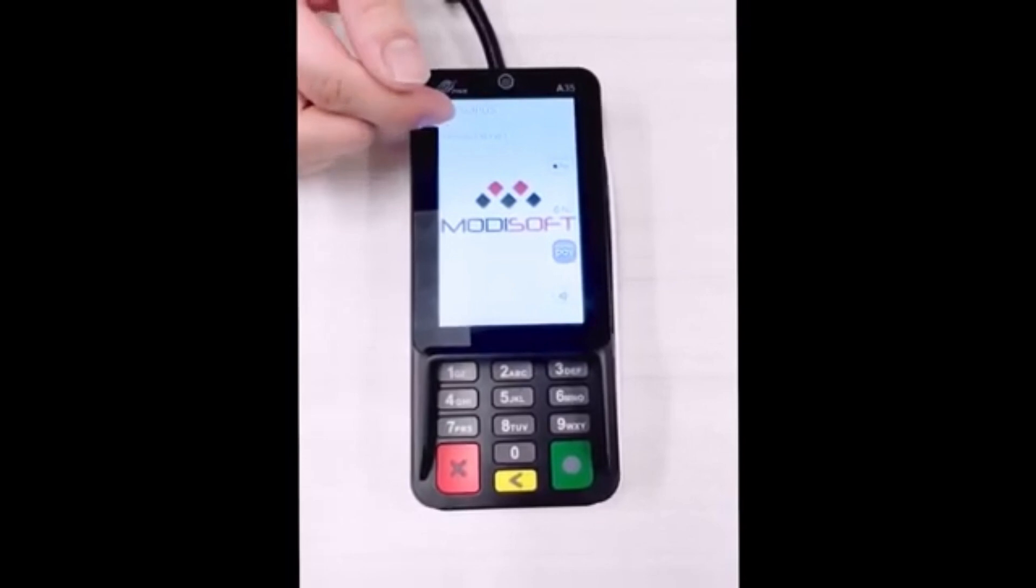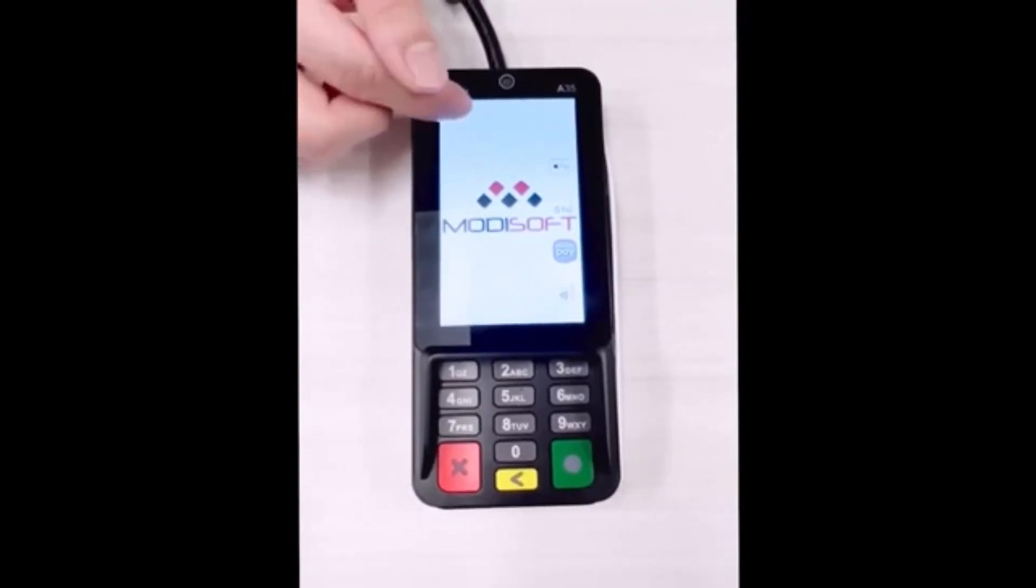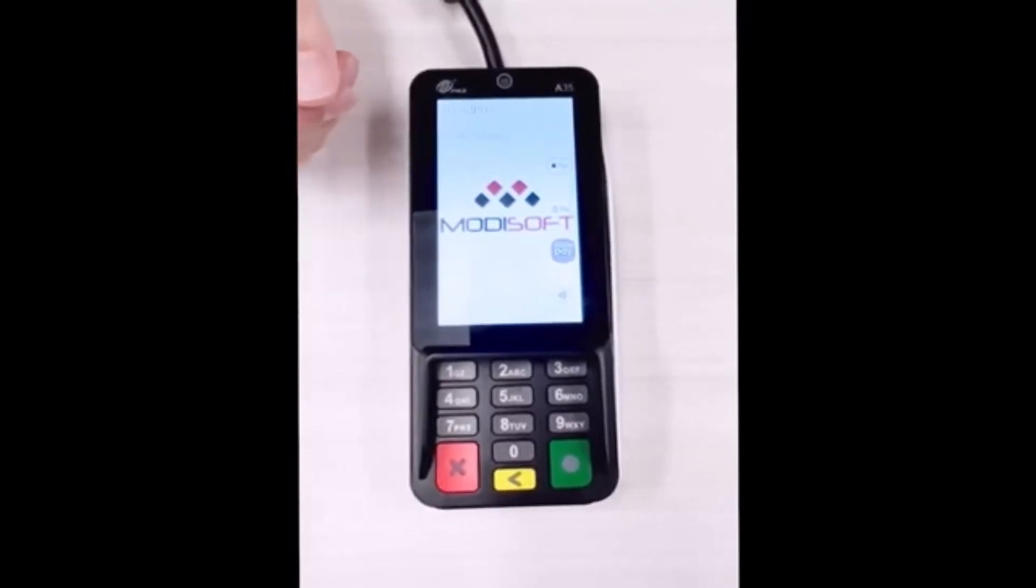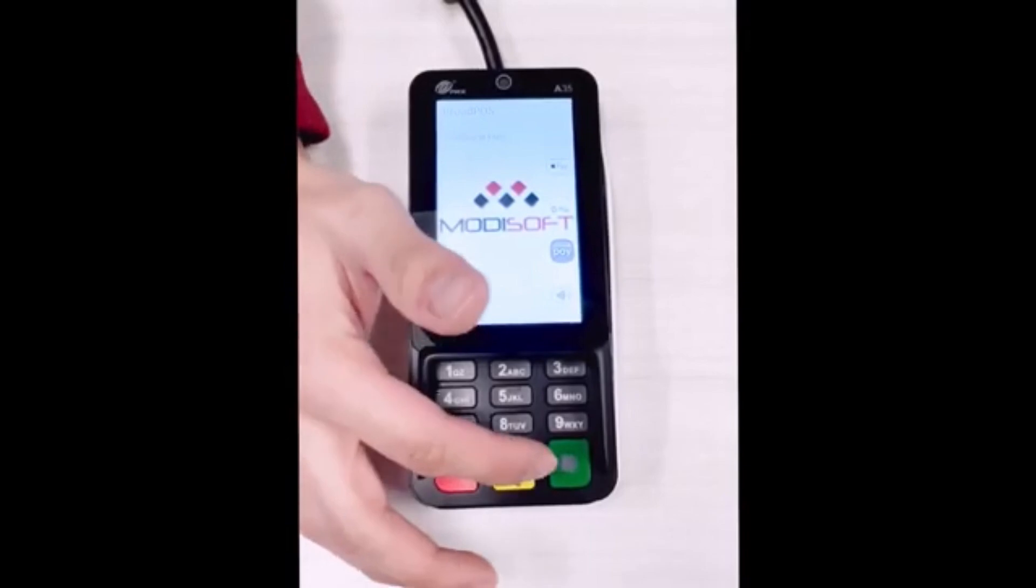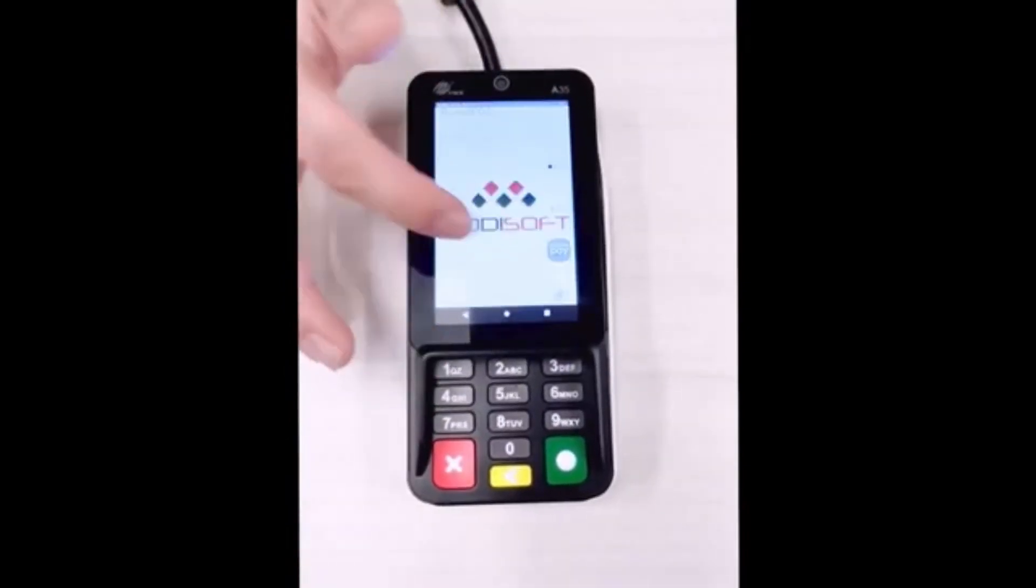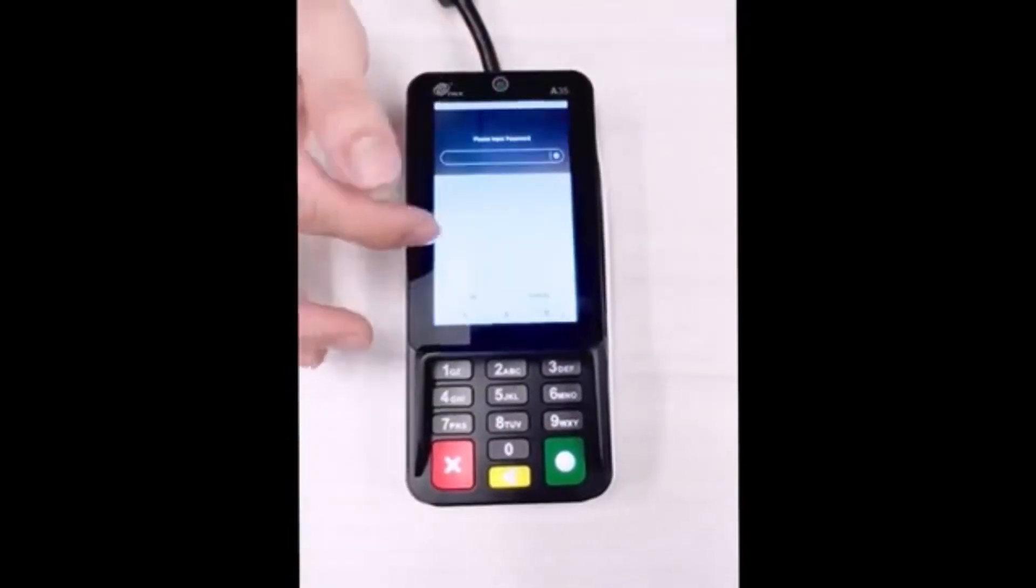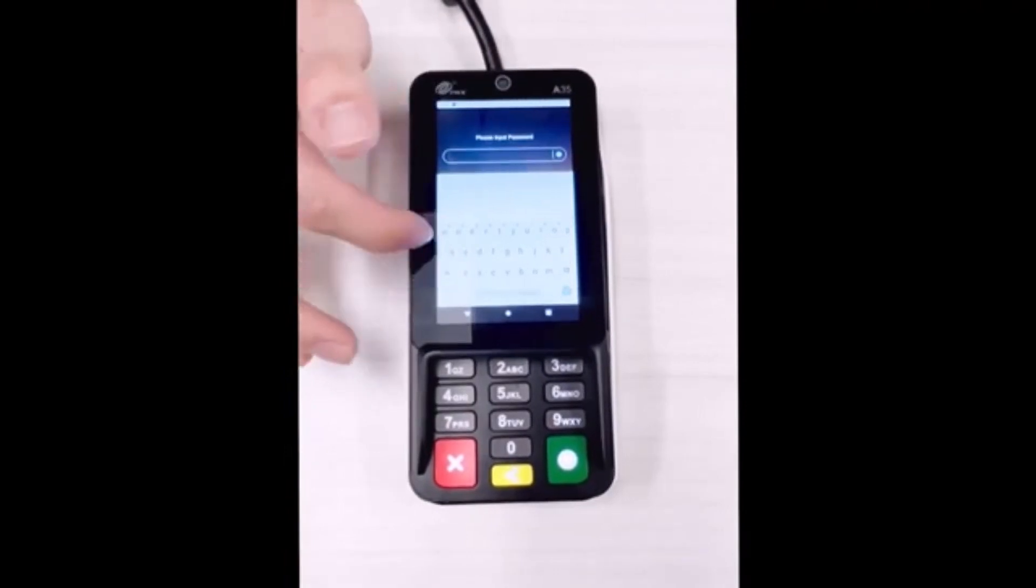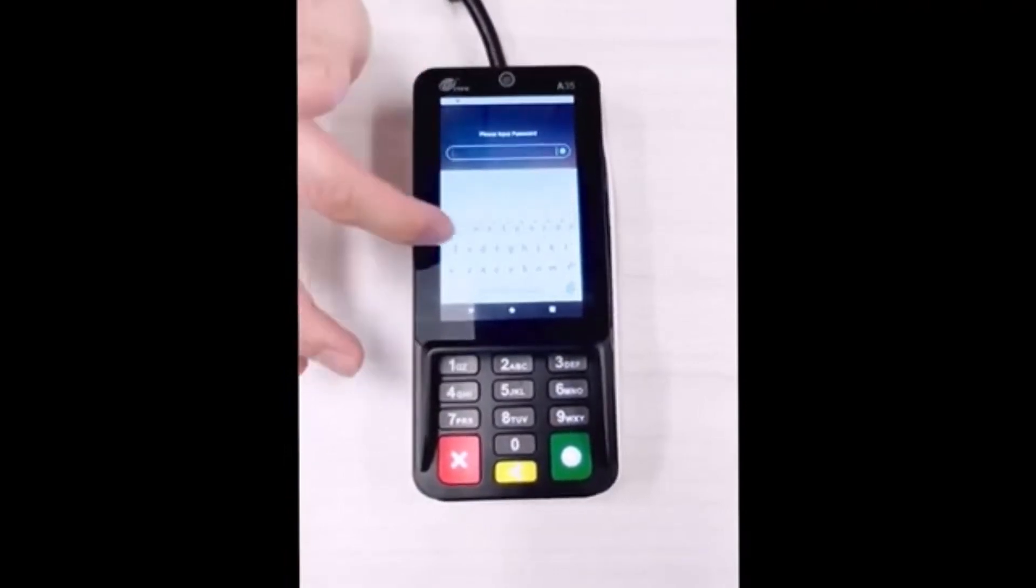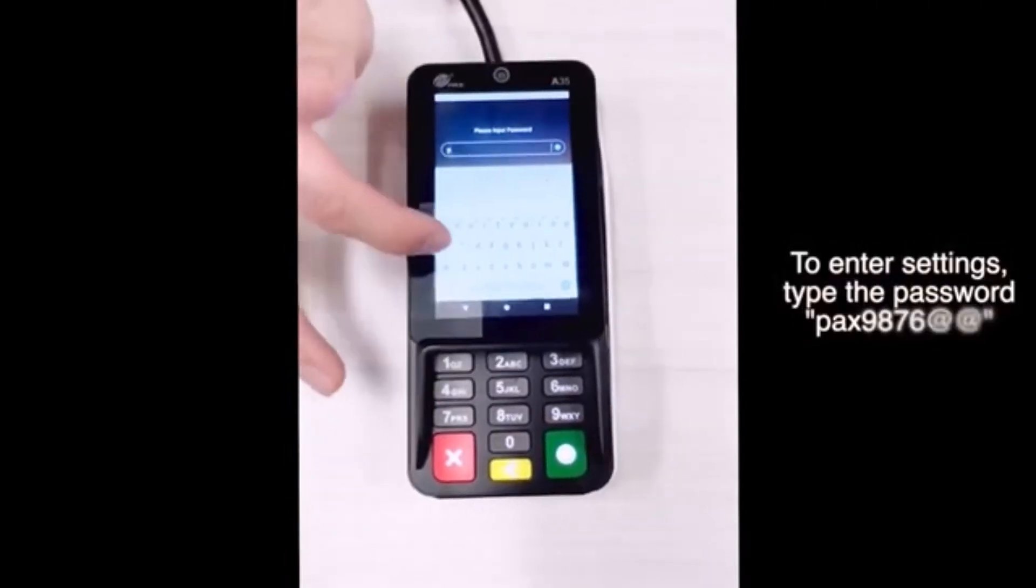If the IP is reading as 0.0.0, then you'll want to go ahead and go to the settings on the actual credit card terminal itself. And you're going to make sure that the ethernet is plugged in, of course, and as well that it is enabled.